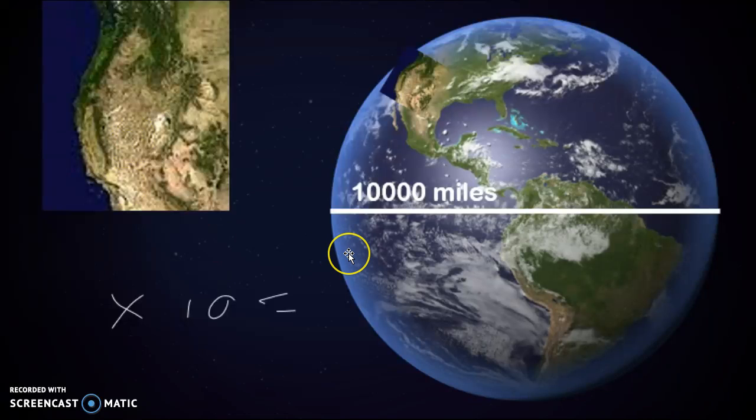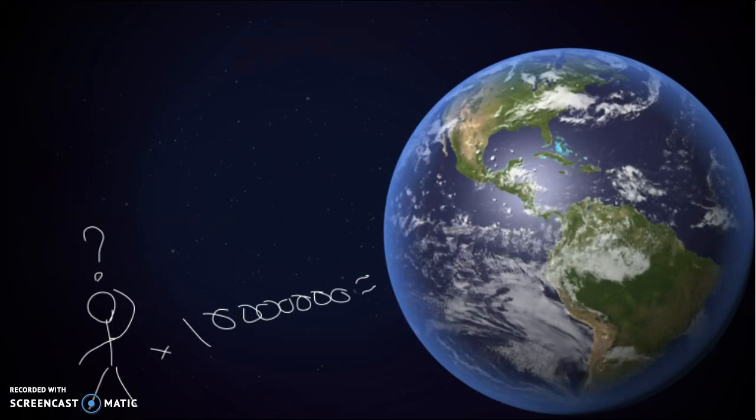Now if we times that by 10, you get the diameter of the Earth, which is about 10,000 miles. And as you can see, I've actually tried to fit this in North America and it does fit. Let's just go back and see that the diameter of the Earth is equal to 10 million average Joes, and that's pretty huge.